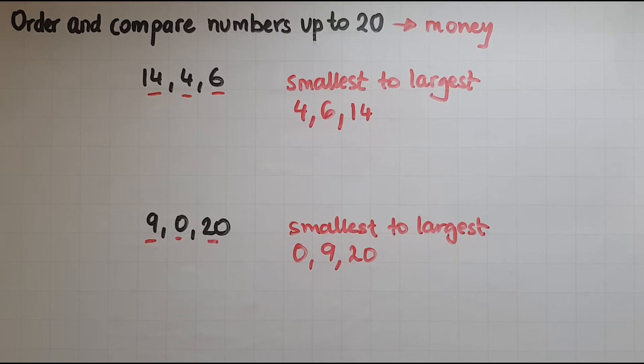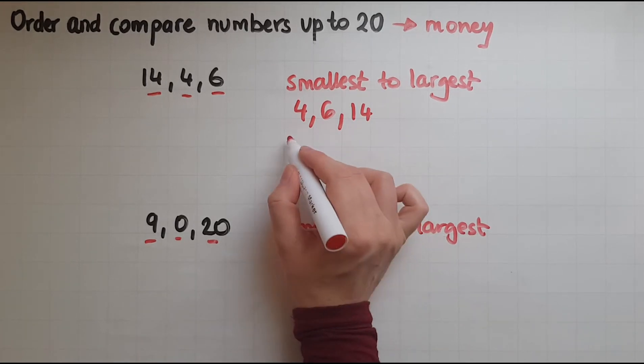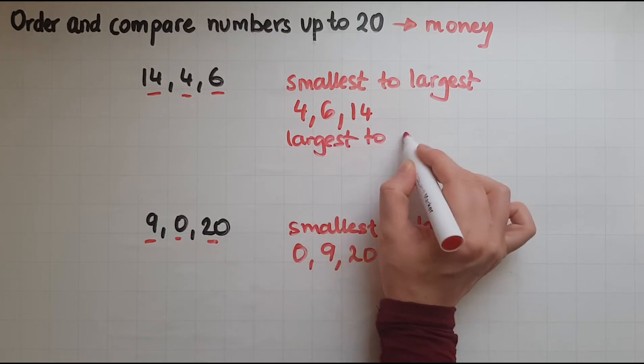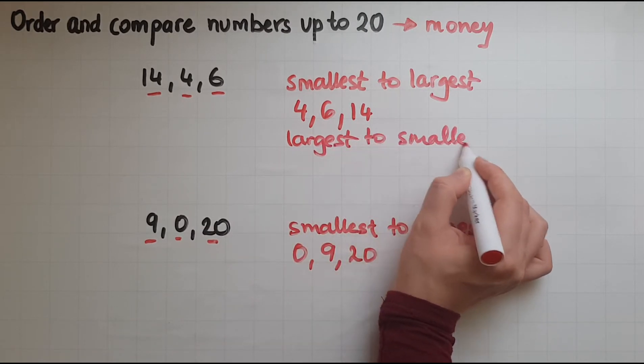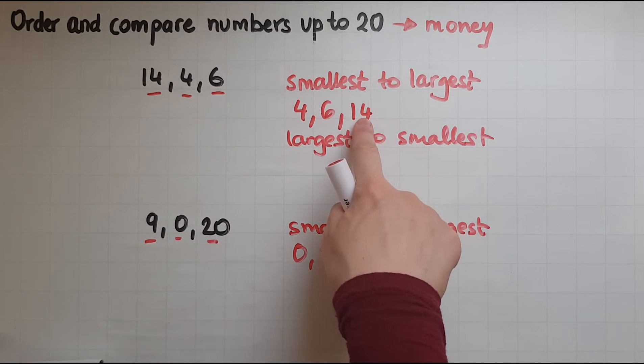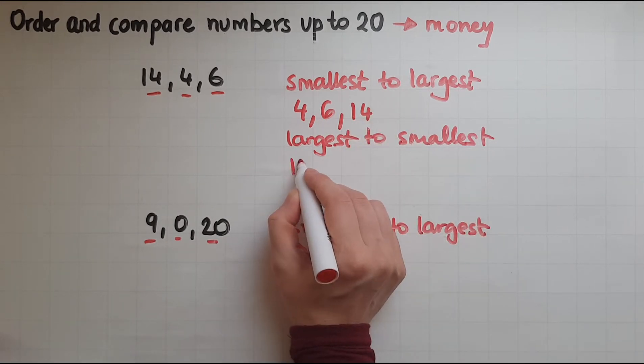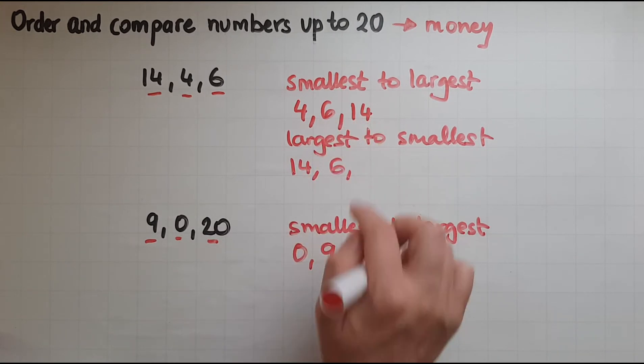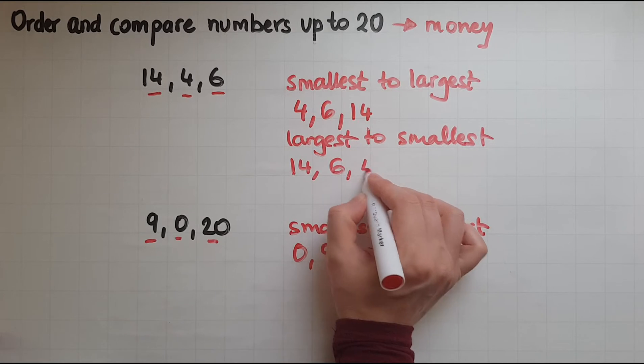If I were asked to order these numbers from the largest to the smallest, then I'll look to put the largest first. So when I ordered, 14 was the largest. That's why I put it last. So that's going to go first now, and then the next one is 6, and then 4.